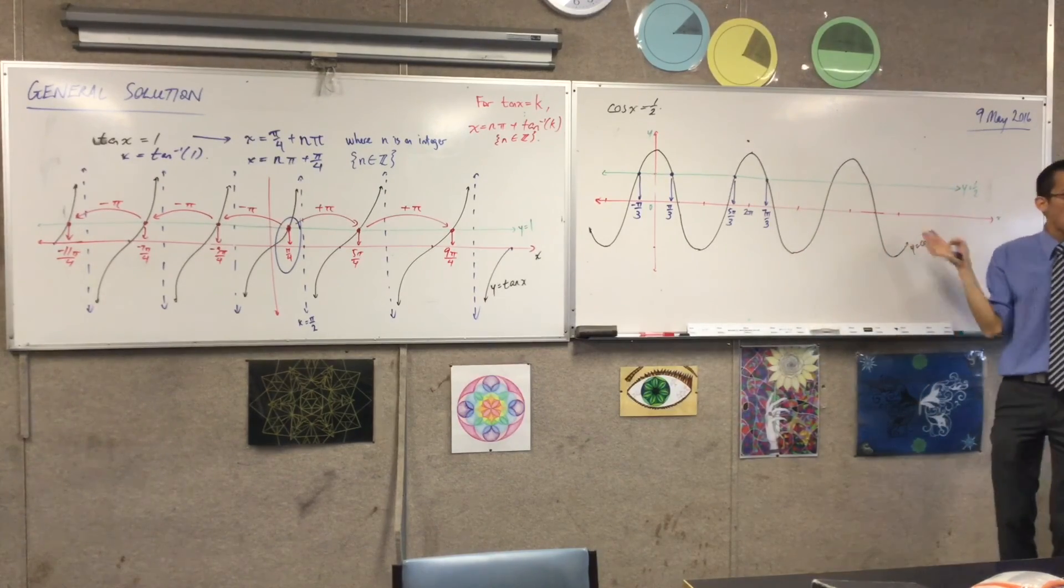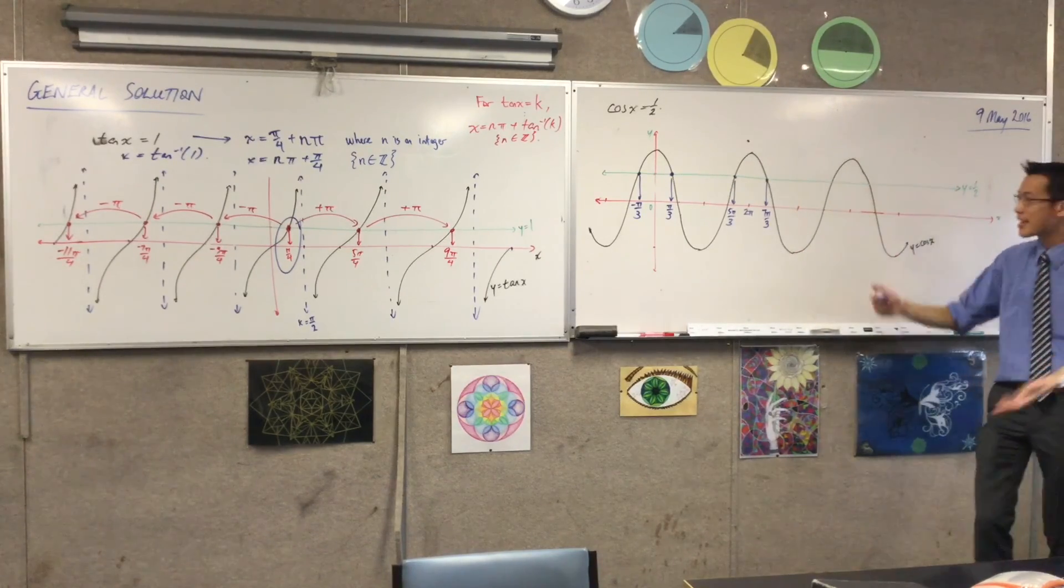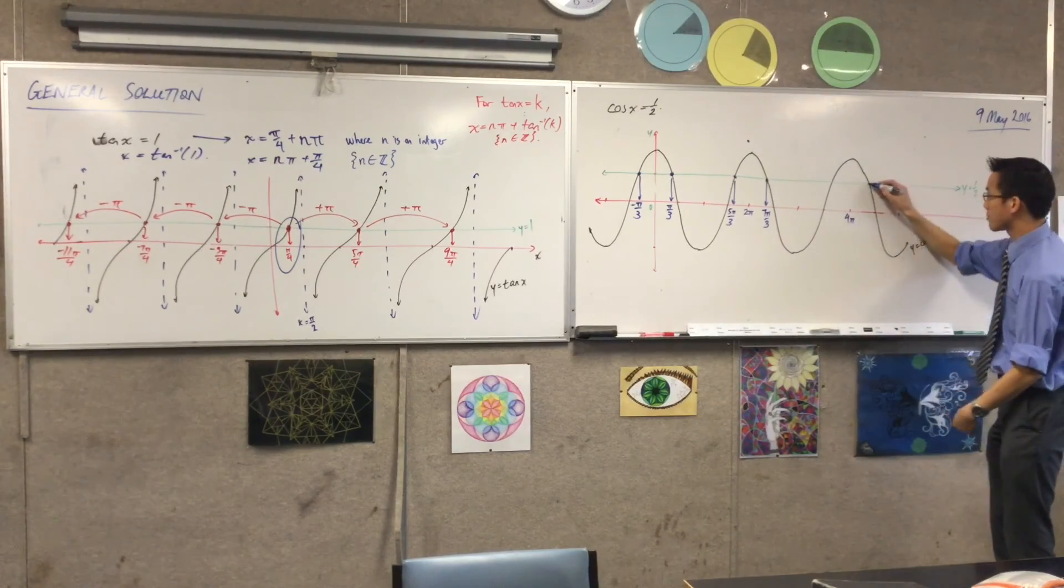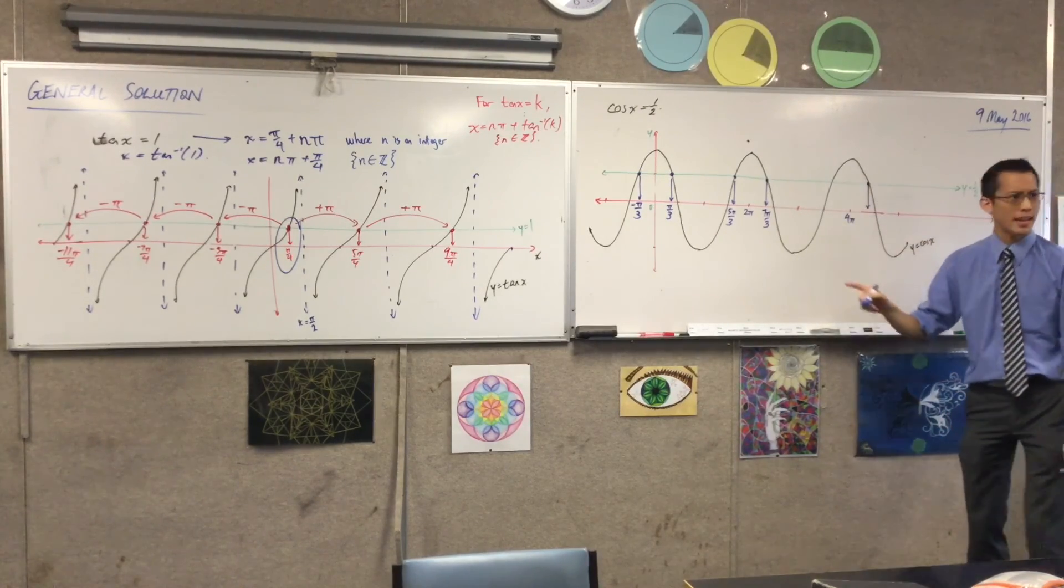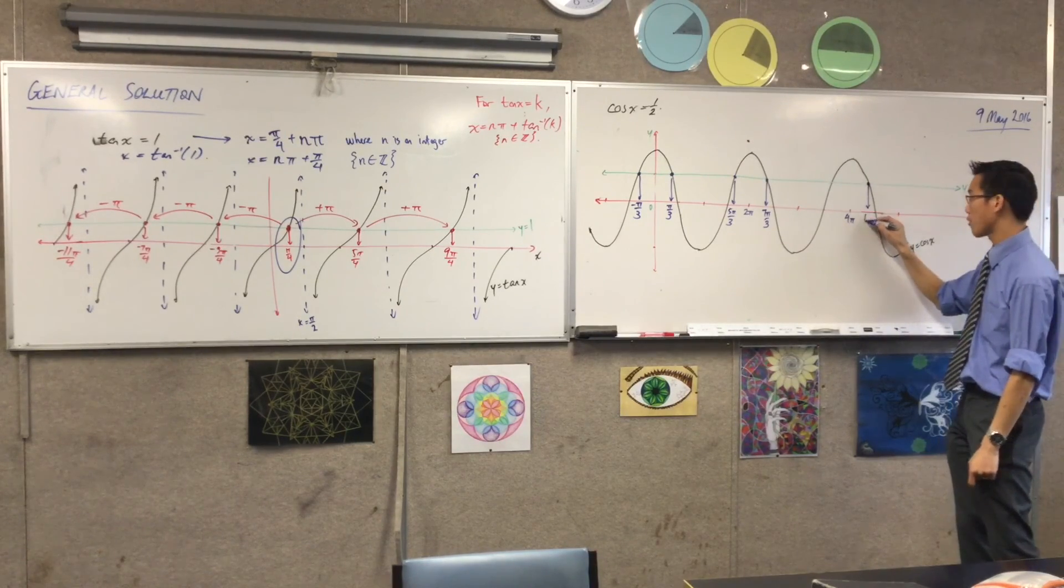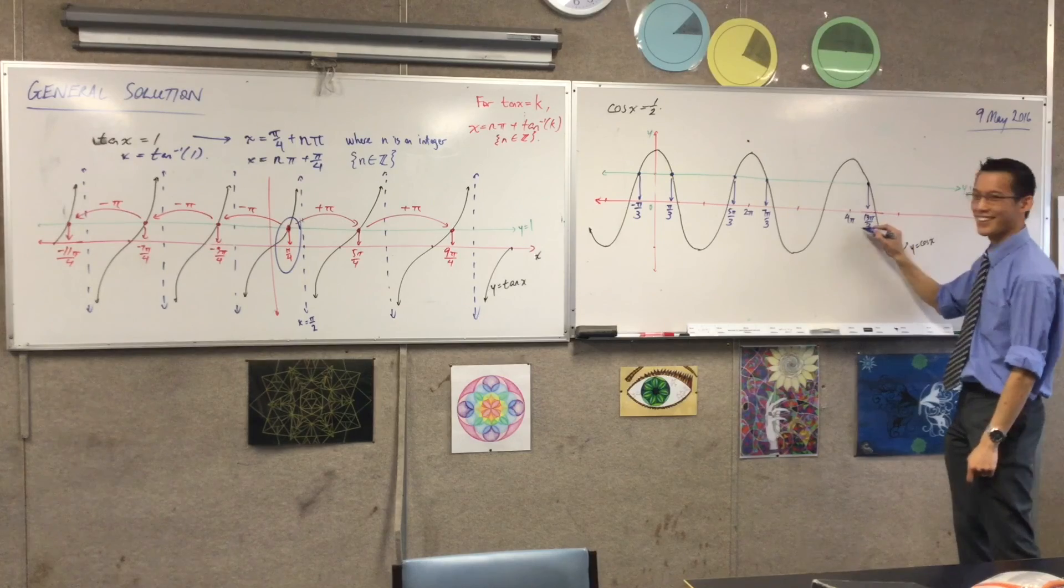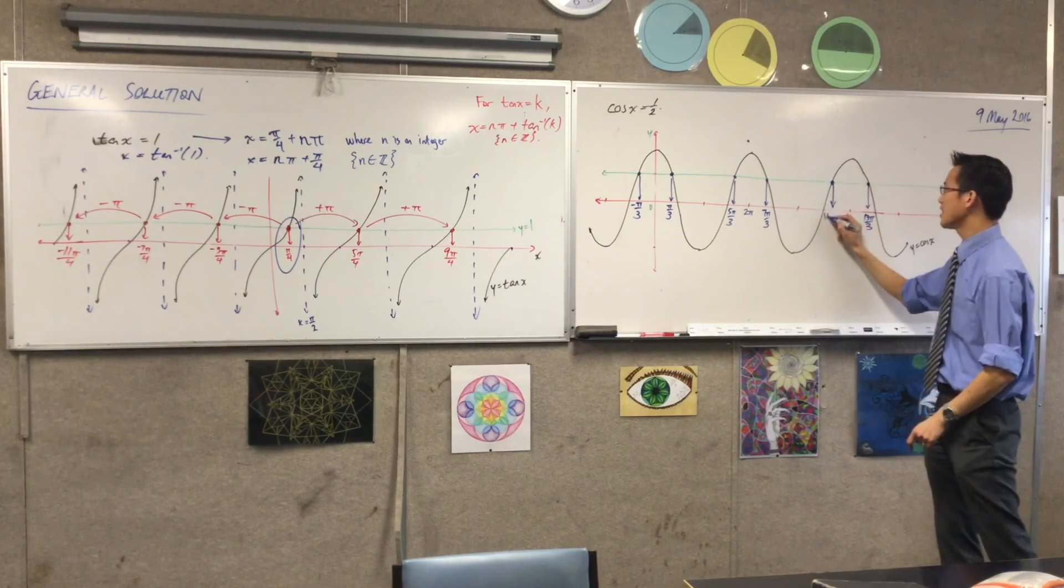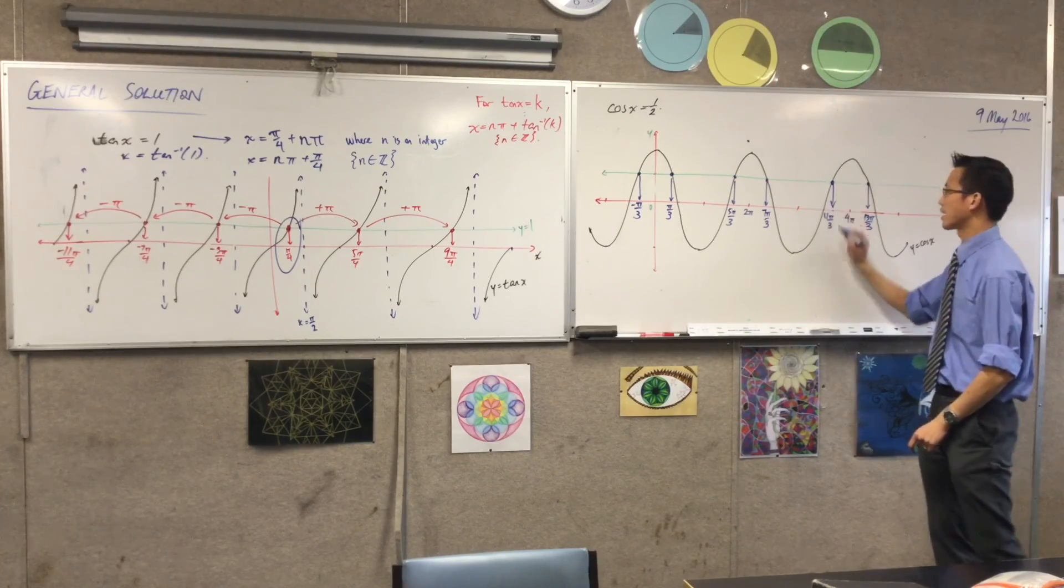Well, I can get another pair of solutions in exactly the same way. There's 4π, right? If I go forwards, I'm adding 6π/3. So, it'll just be 13π/3. I can't remember. I did the one before. You did the other one, which is this guy, which is 11π/3.